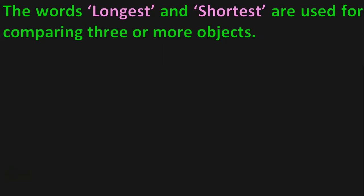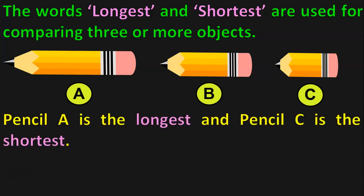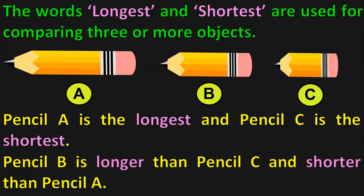The words Longest and Shortest are used for comparing three or more objects. Let us take the example of three pencils now and name them A, B and C. Which is the longest pencil here? Pencil A is the longest. And Pencil C is the shortest. We can bring in the terms longer and shorter also here. Pencil B is longer than Pencil C and shorter than Pencil A.